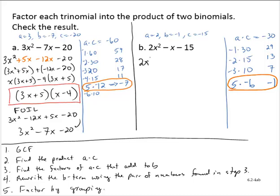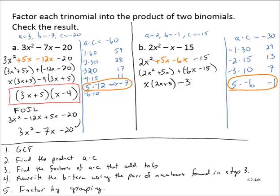So I rewrite this as 2x squared plus 5x minus 6x minus 15. Using the grouping method, my common factor for the first two terms is x, so I have x times (2x plus 5). For the second grouping, I factor out a negative 3. Negative 3 times 2x is negative 6x, and negative 3 times positive 5 is negative 15. I have a common binomial factor of 2x plus 5, so I can write the factored form as (2x plus 5)(x minus 3).